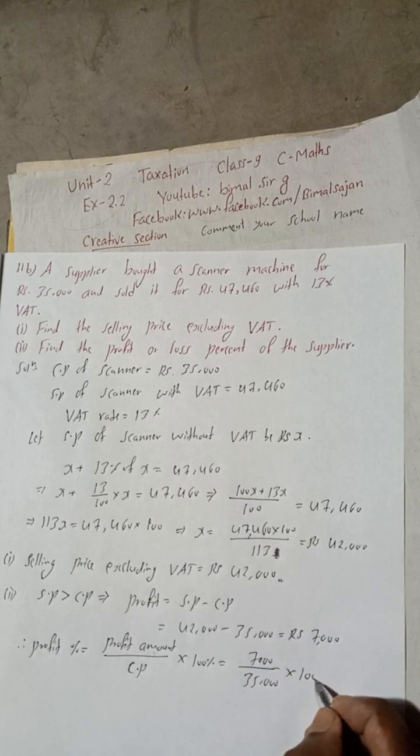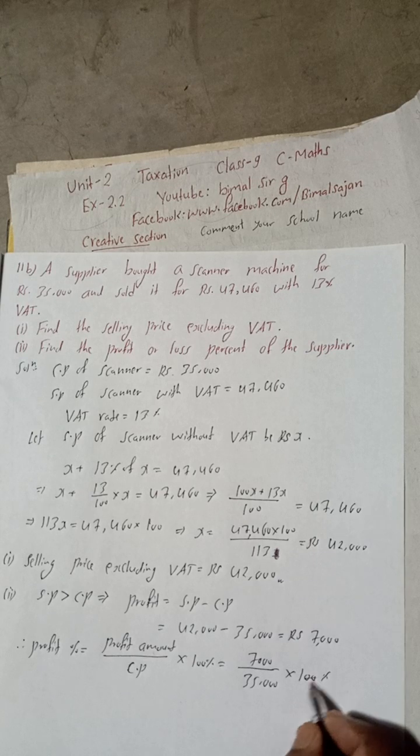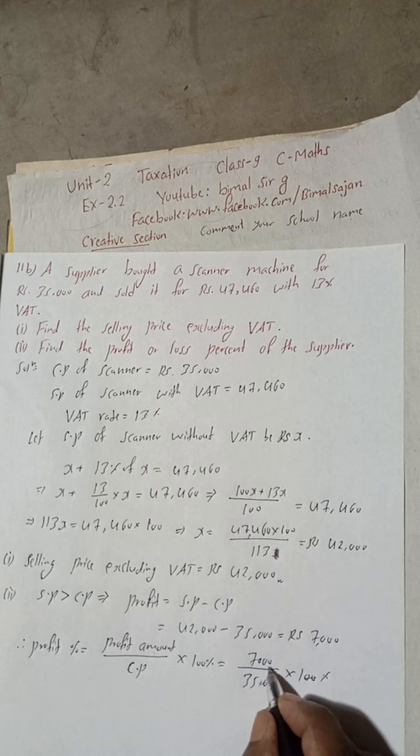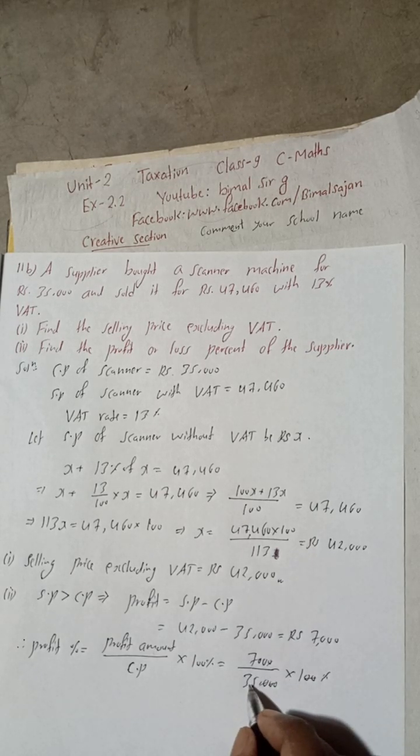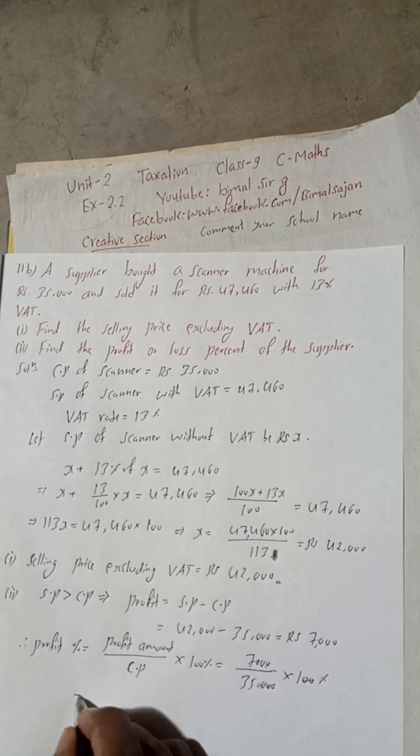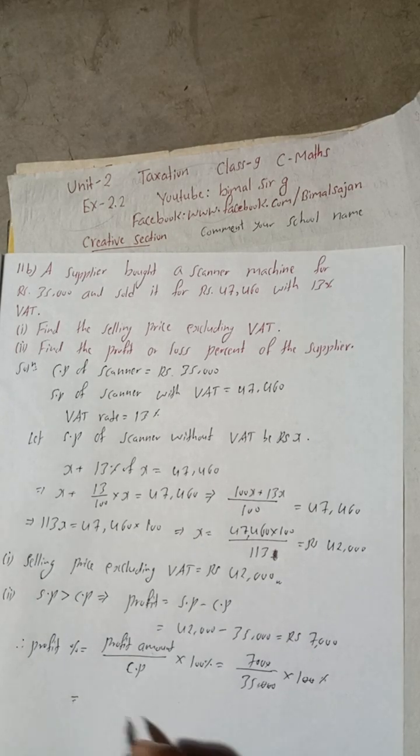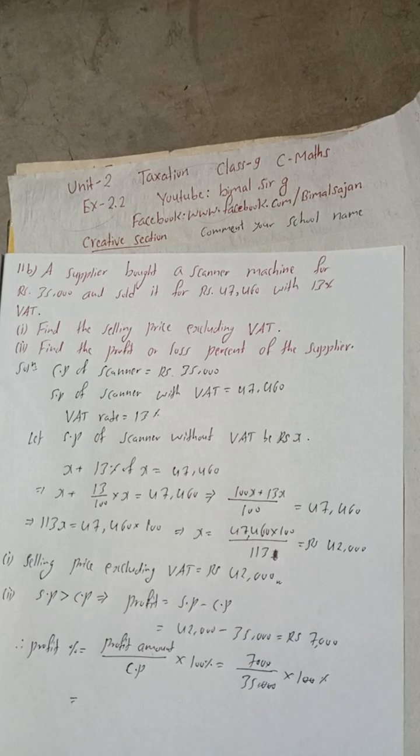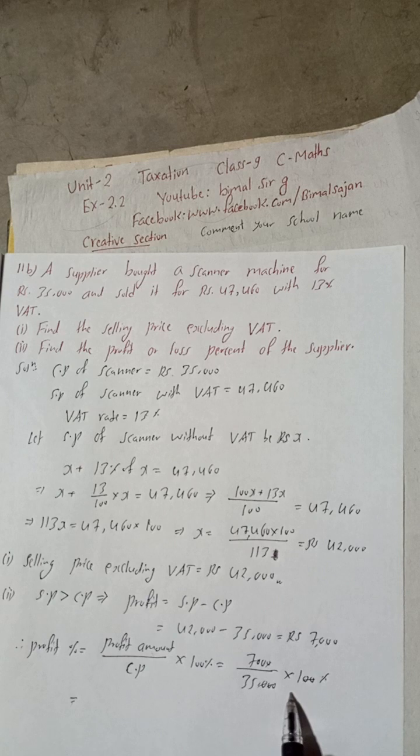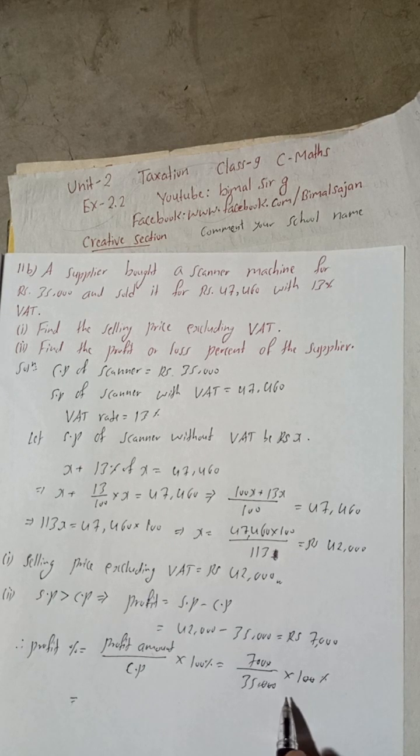Profit amount by CP into 100%. So profit amount is here 7,000 by CP is here 35,000. Profit amount by CP into 100%. So 20, 20 cancel, 10, 10 cancel. So 35, there was how much? 35,000.